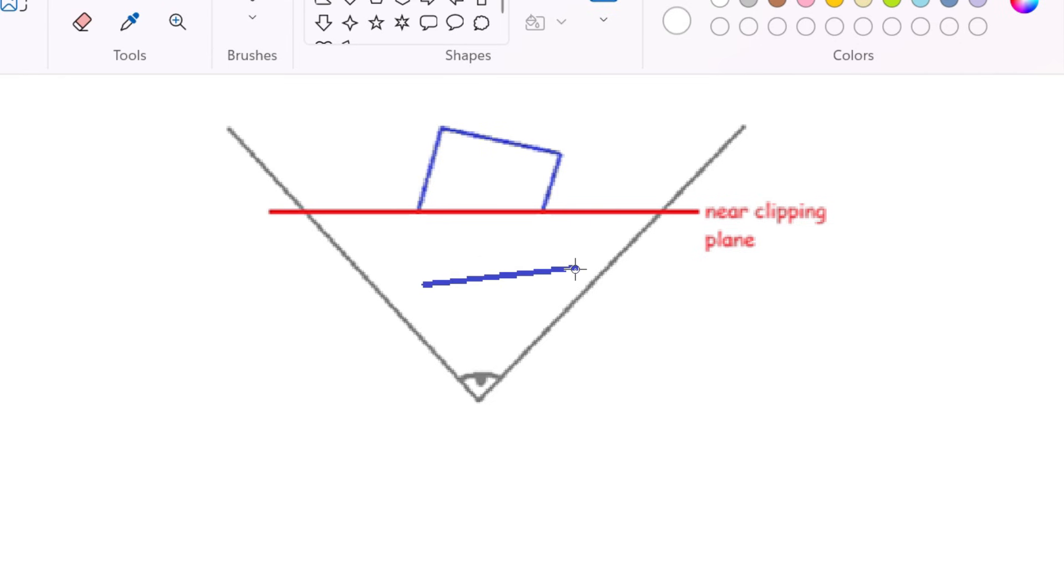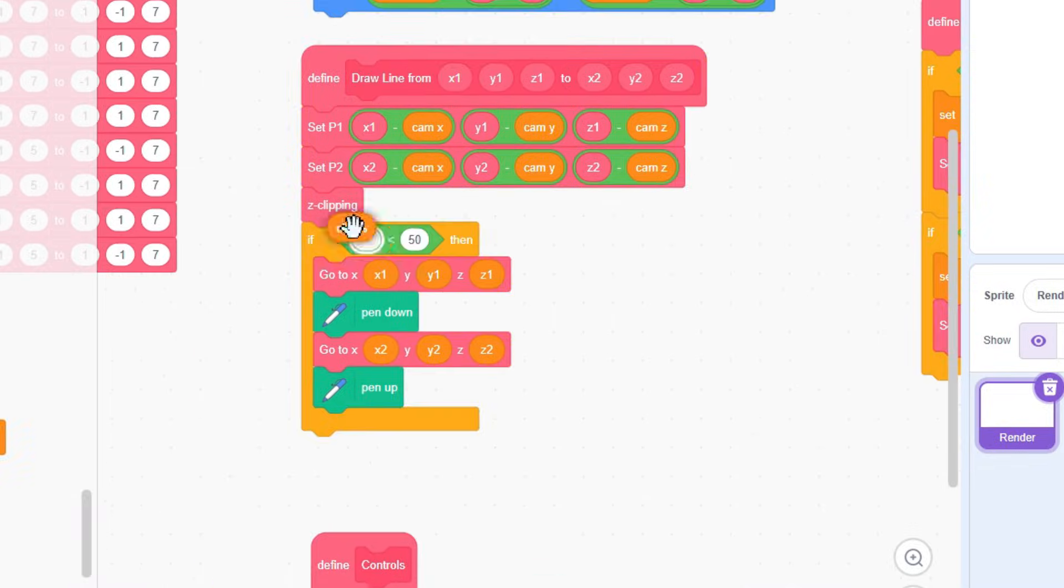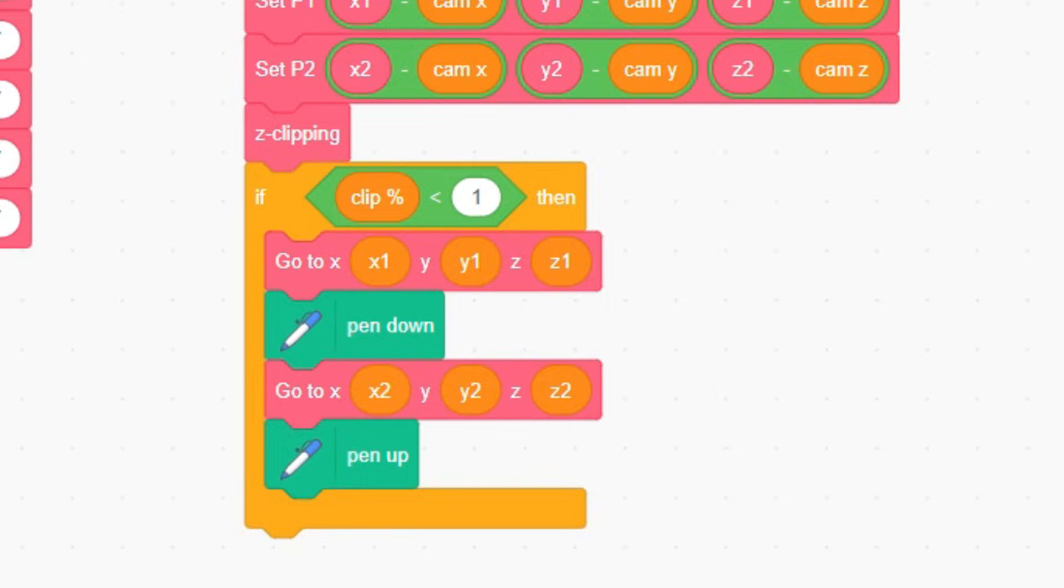Do this really carefully and ensure it looks like this by the end. And finally, if the line is entirely behind the plane, then we won't bother drawing it at all. So we will only draw if clip percent is less than 1, which is 100%. And that should do the fix.